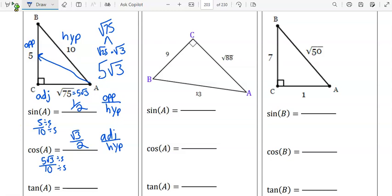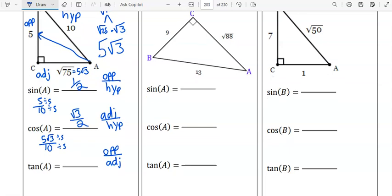Tangent is opposite over adjacent. 5 over 5 square root of 3. The 5's cancel. You have 1 over square root of 3. We want to rationalize this though. We don't want any square roots in the denominator. So multiply by the unit fraction square root of 3 over square root of 3. And you get square root of 3 over the square root of 9, which is 3. So tangent of A is square root of 3 over 3.